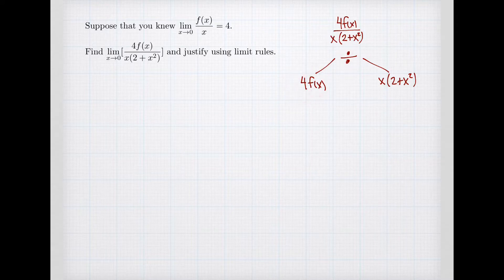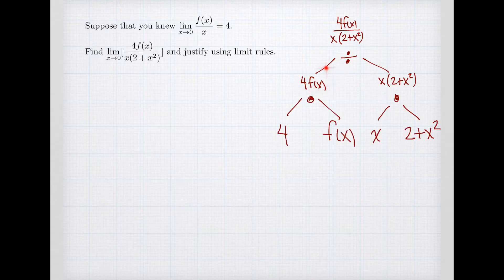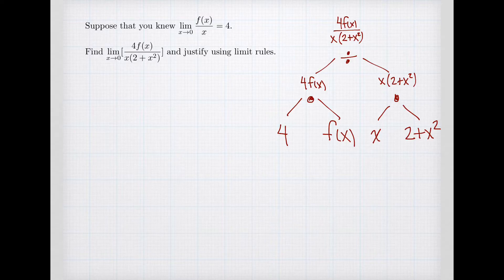So this formula is a quotient: we're dividing the formula for f(x) by the formula x(2+x²). We can break each of those down further: 4f(x) is a product — multiplication of the constant 4 with f(x) — and the denominator x(2+x²) is also a product of x and 2+x².